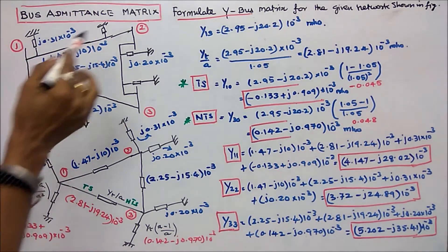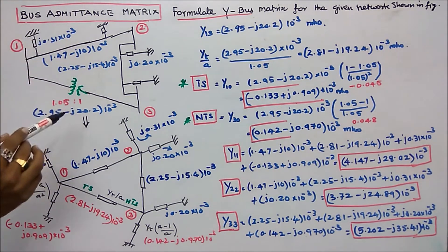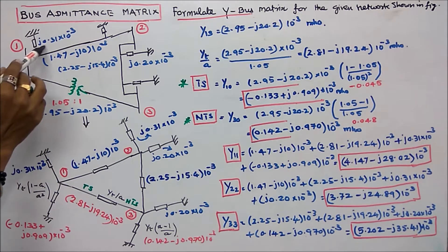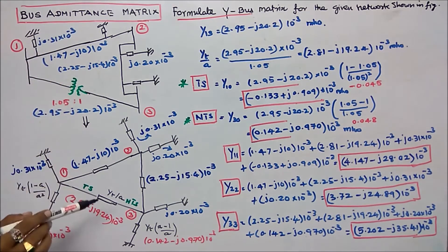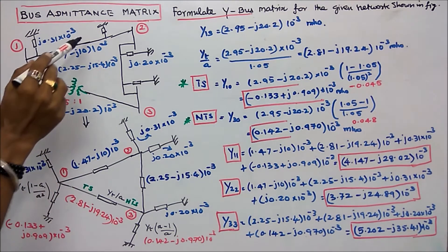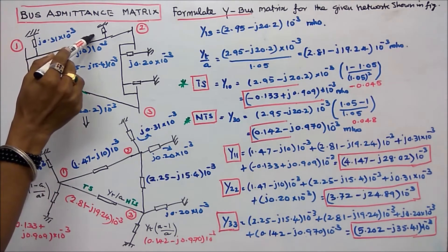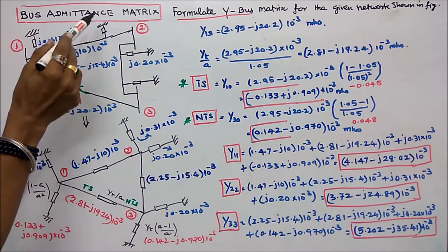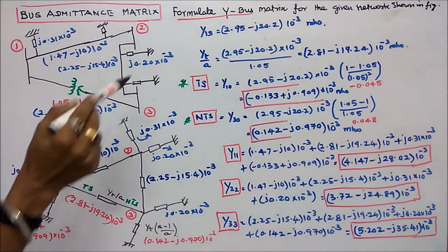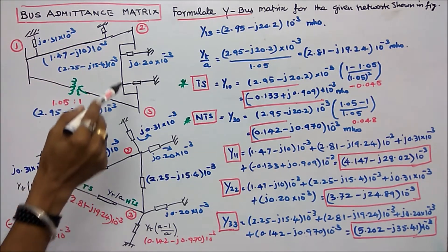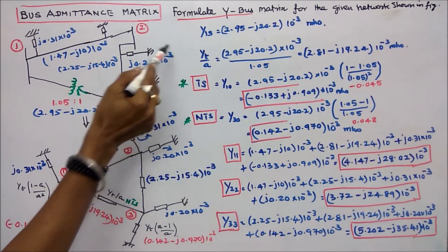Line charging admittance of line 1-2 is j0.31 into 10 power minus 3. Line 2-3 line charging admittance is j0.20 into 10 power minus 3.